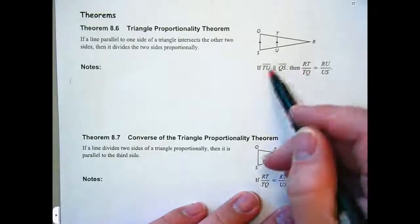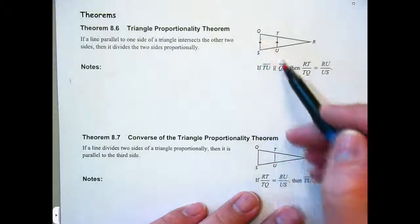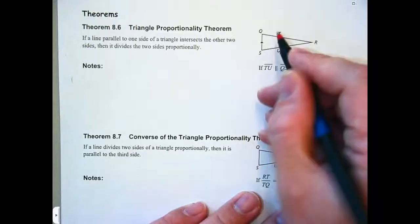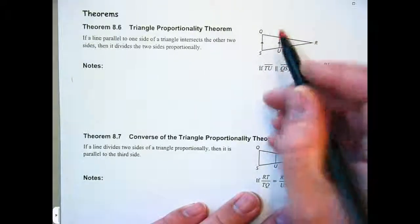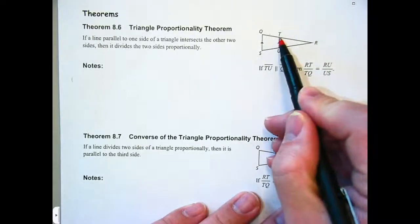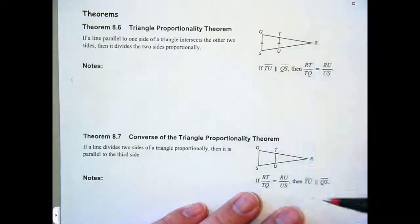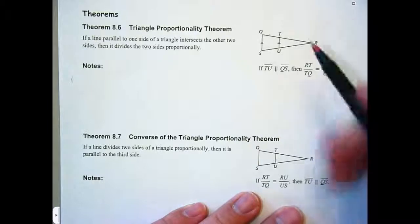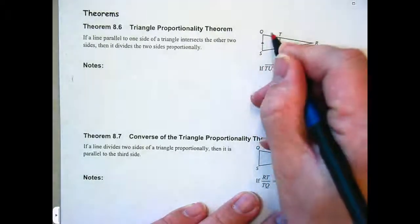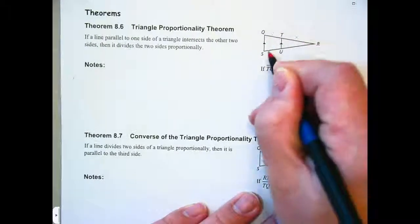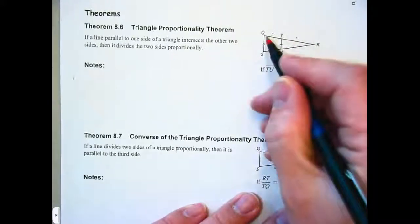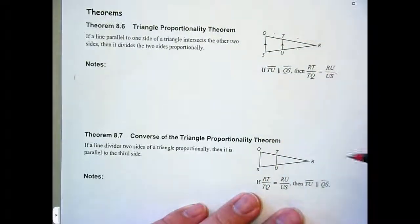This theorem states that if TU is parallel to QS, then this length right here, QT, is to TR as SU is to UR. So this is to that, as that is to that. You make up two fractions, which make a proportion, and you're good to go.